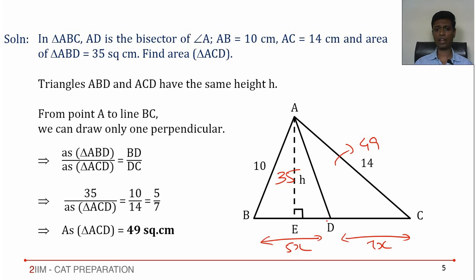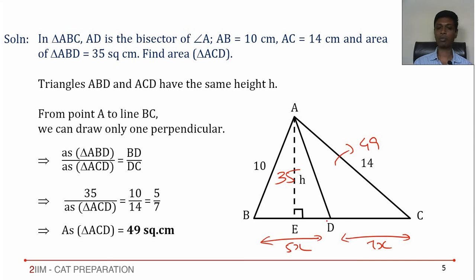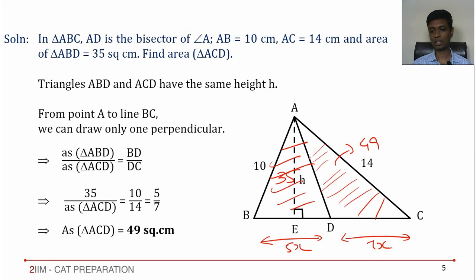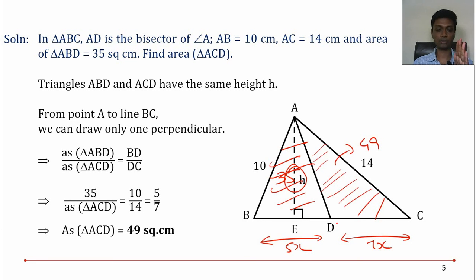This is a direct application of the angle bisector theorem. The only extra step is using area = half times base times height. Remember, the perpendicular height need not lie inside the triangle. The key insight is that for triangles ABD and ACD, the height from A is the same. Once you know that, the question follows directly — areas are in the ratio of their bases.